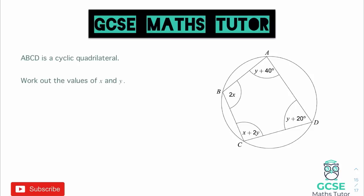Okay, so looking at this question. Now it says ABCD is a cyclic quadrilateral. Work out the values of x and y. Now the fact that we have two unknowns straight away makes me think that there's going to be simultaneous equations involved. The fact that we have a cyclic quadrilateral means we're going to be using that rule that the opposite angles in a cyclic quadrilateral add up to 180 degrees. So let's think about how we could apply that.